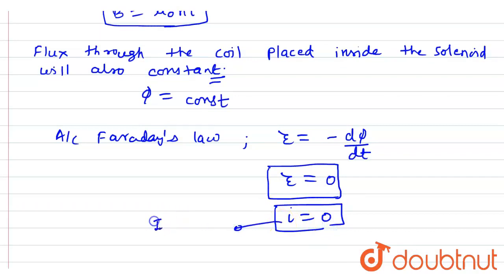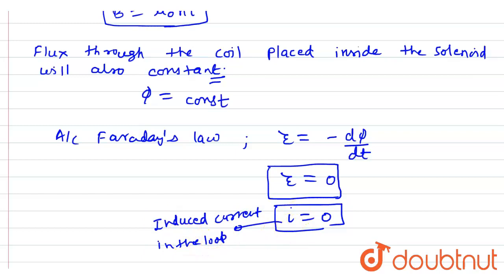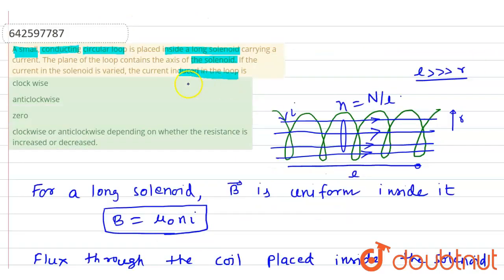That is, the induced current in the loop will also be 0. So the answer will be 0, which is the third option. Thank you.